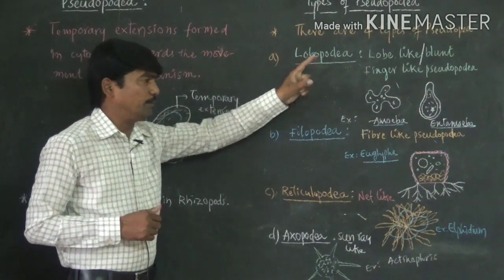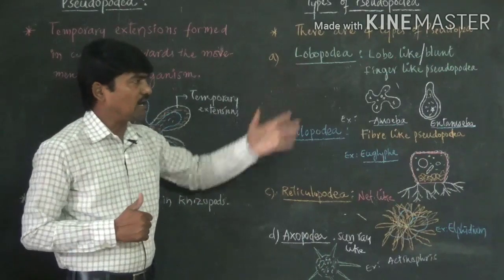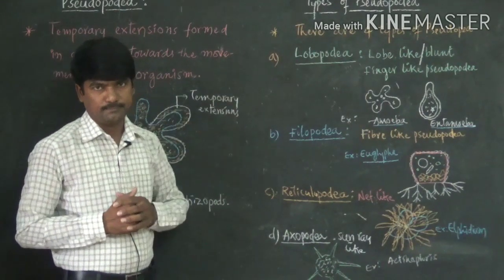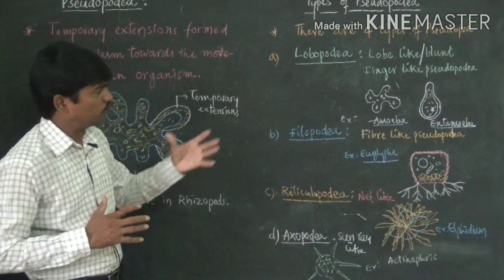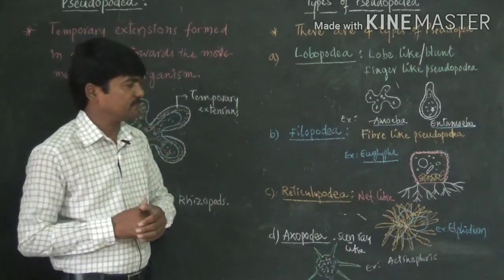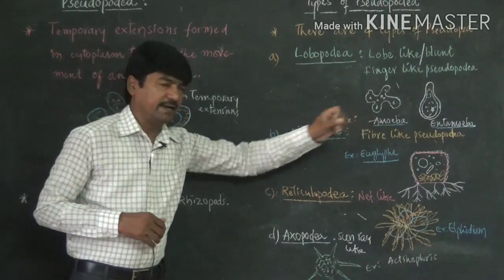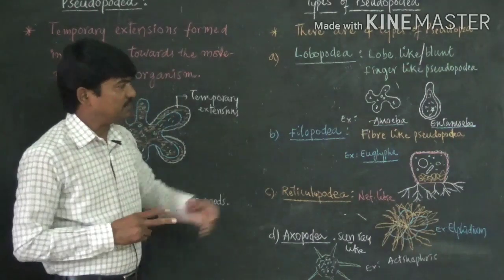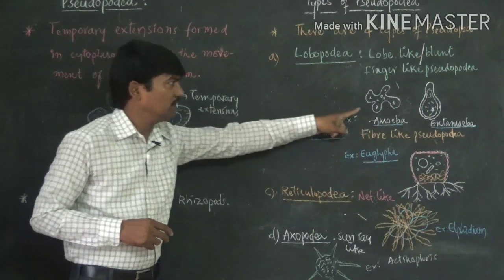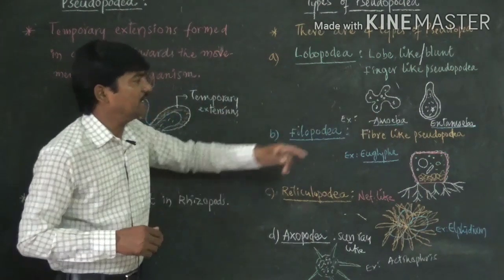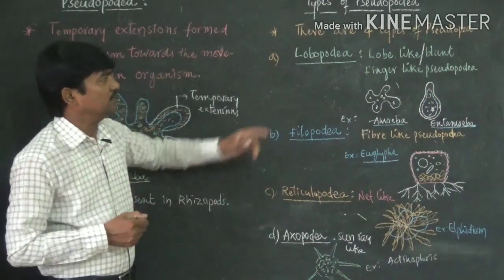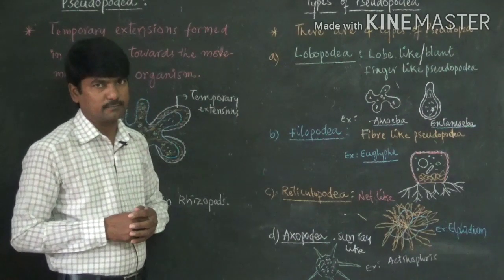The first type is lobopodia — lobe-like or blunt finger-like structures known as lobopodia. Amoeba and Entamoeba are two animals that have lobopodia. Lobe-like structures are present, and in the anterior side of Entamoeba, one specific lobe-like structure is present, which is called lobopodia.